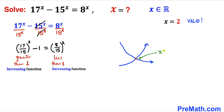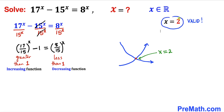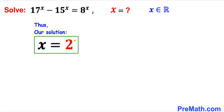That single intersection point corresponds to x equals to 2, which we already found. So we conclude that there is just one solution: x equals to 2. That's our final answer. Thanks for watching and please don't forget to subscribe to my channel for more exciting videos.